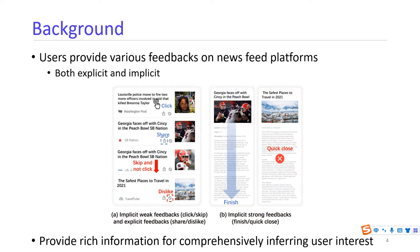These implicit behaviors are usually also very noisy. Different from implicit weak feedbacks and explicit feedbacks, there are also some implicit strong feedbacks constructed from user behaviors. For example, users may like to finish reading an article if they are really interested in it. And if users are only attracted by the title but not satisfied by the content, they may close the webpage very quickly and leave the news feed platform.